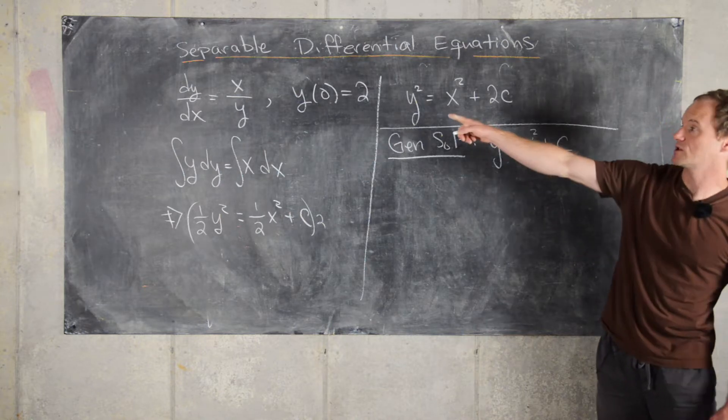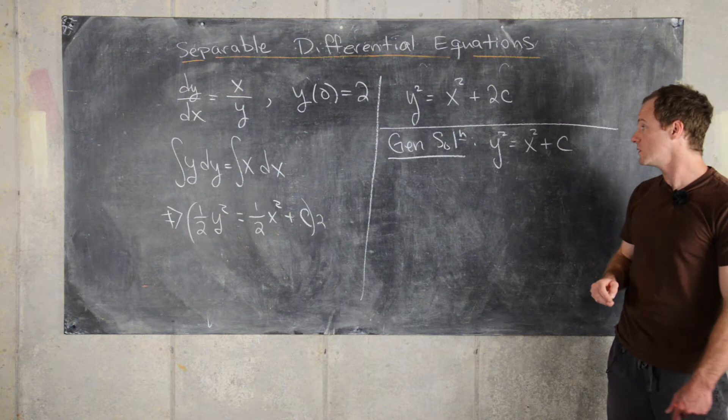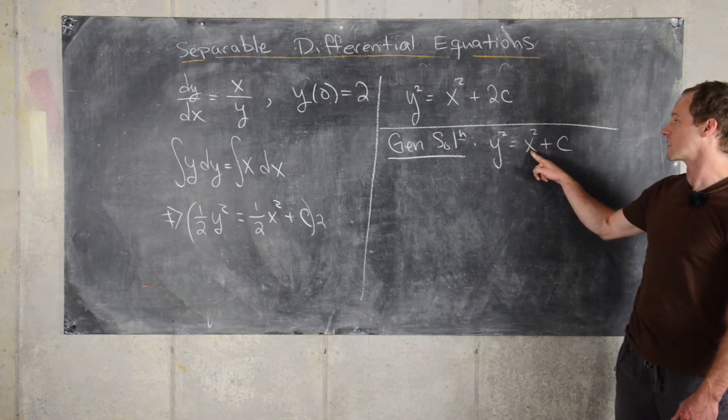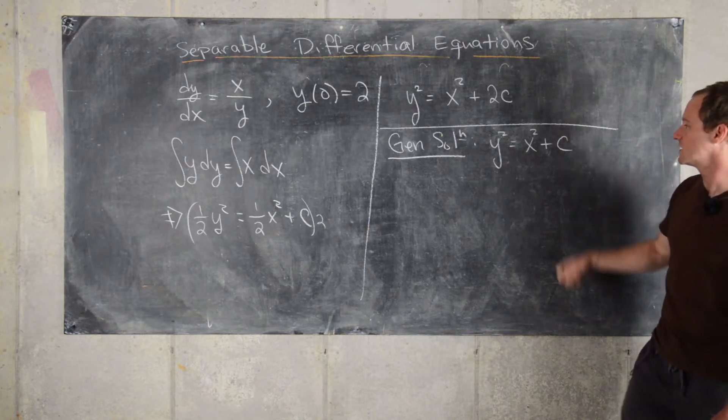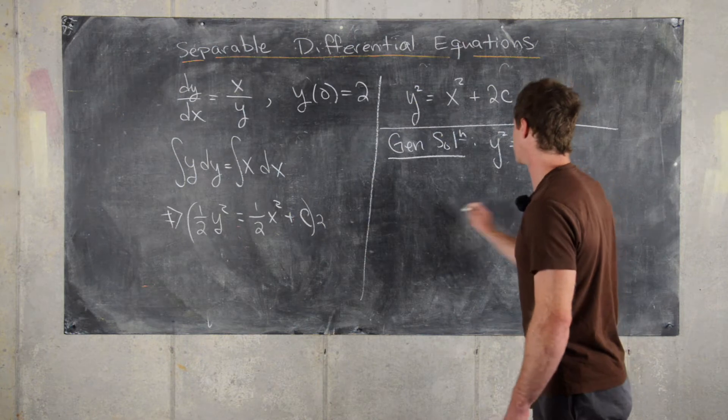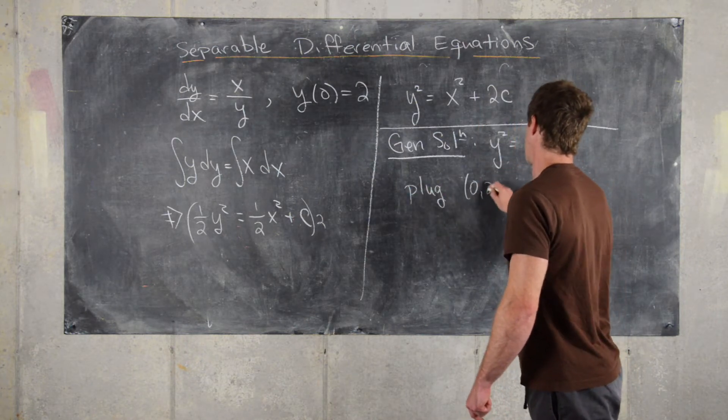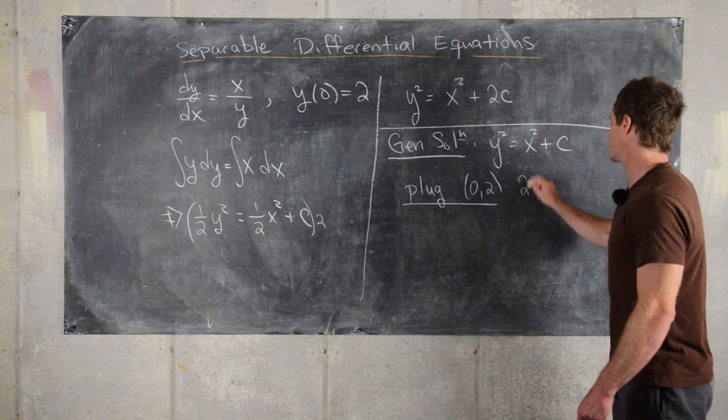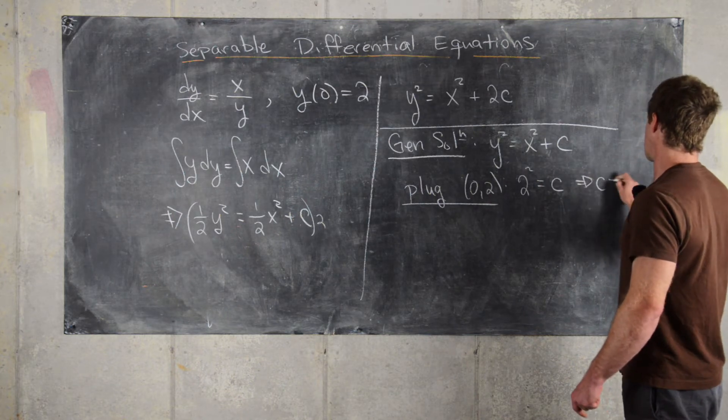Now let's look at the initial condition: y(0) = 2. If I plug 0 in here, I get y² = C. So plug (0,2) into this equation, and we'll get 2² = C. That means C = 4.